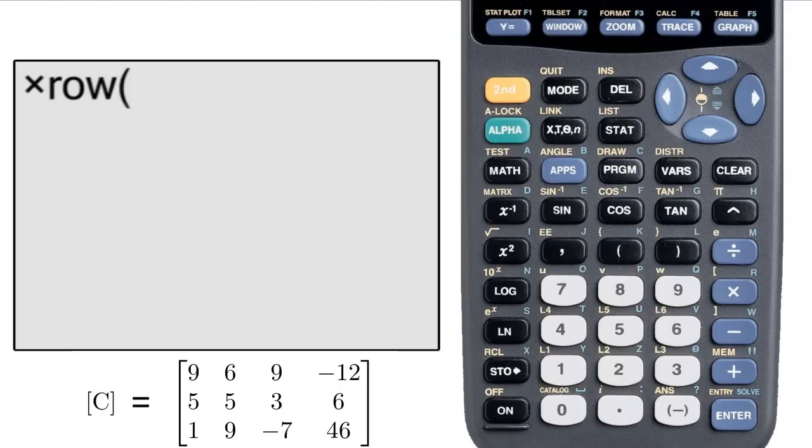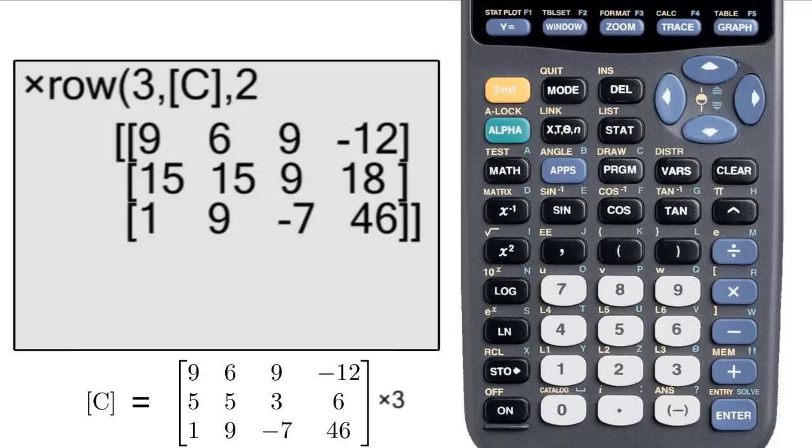Next is row multiplication. Go to the menu and select it. Then hit the scalar first, then enter the matrix, then enter the row that you want to multiply by that scalar. Hit enter and get your result.